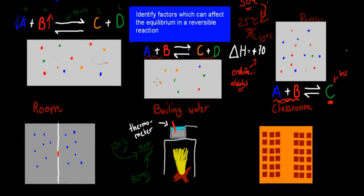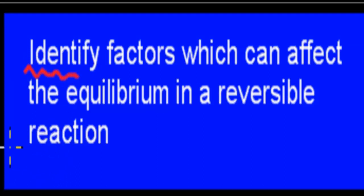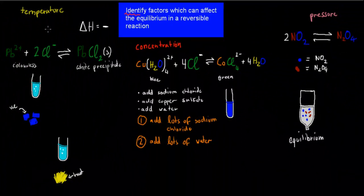These are the ideas. We want to know about equilibriums in terms of reversible reactions — what substrate concentration increase does to the reaction, what temperature change does to the reaction, and what pressure change does to the reaction. These were just quick examples, but now the actual dot point says: identify factors which can affect the equilibrium in a reversible reaction. You need to identify the factors — and these factors were temperature, concentration, and pressure.